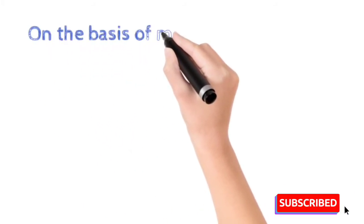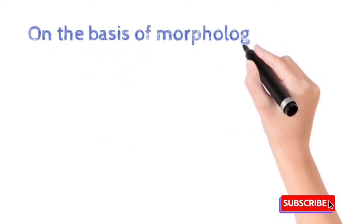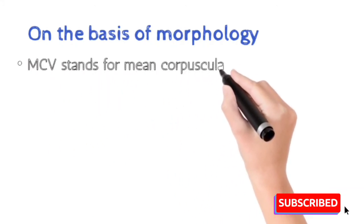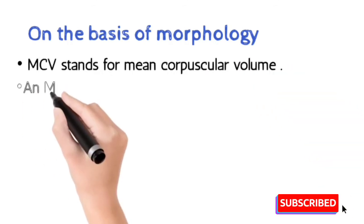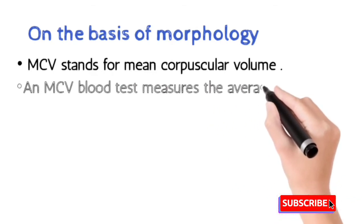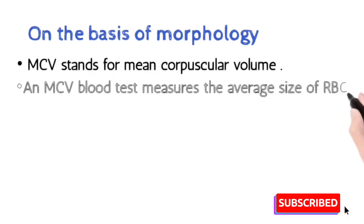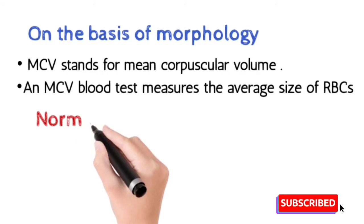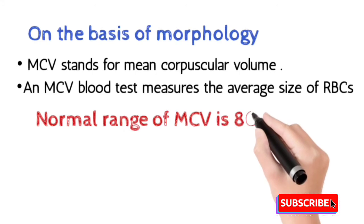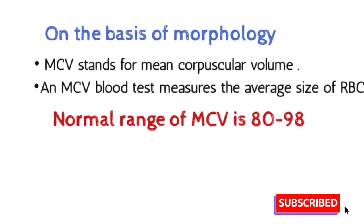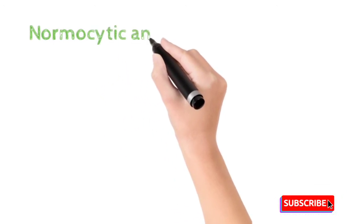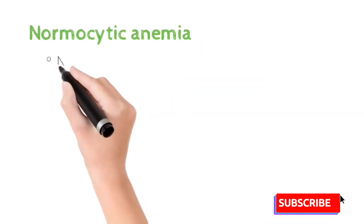On the basis of morphology, this classification is based on the MCV value. MCV stands for mean corpuscular volume. An MCV blood test measures the normal range of RBCs in the blood. The normal range of MCV value is from 80 to 98. We divide the types of anemia according to this value.